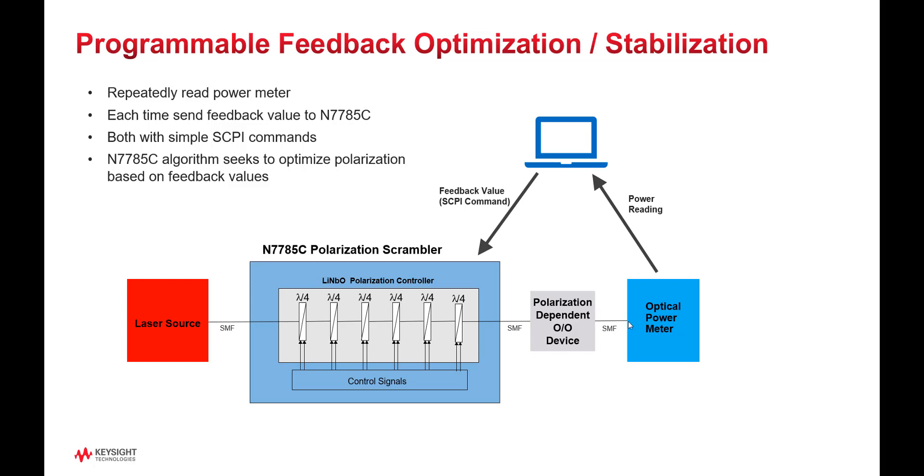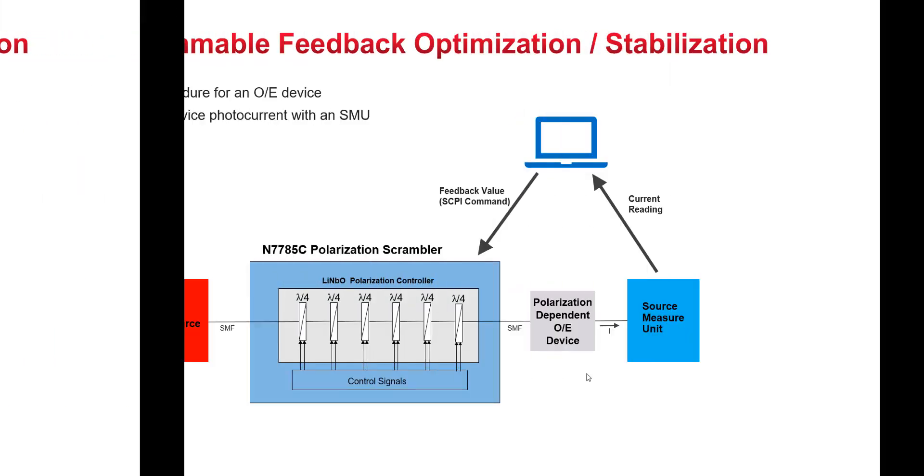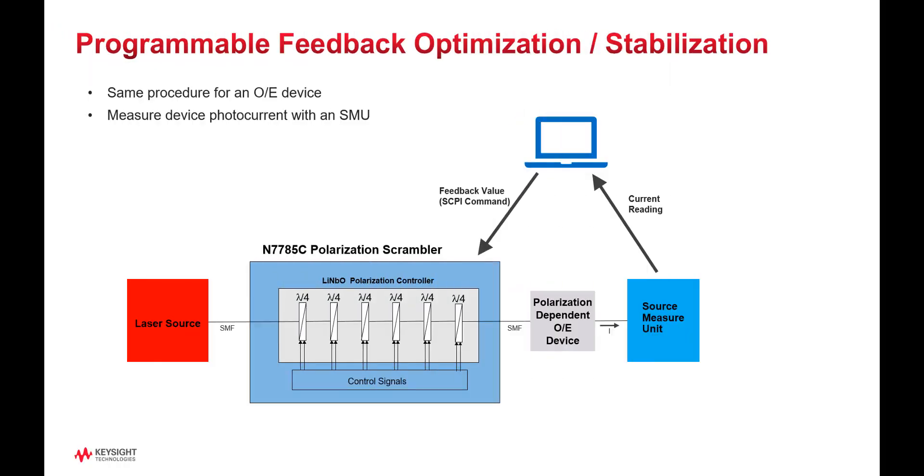is found on the optical power meter. This is simple to implement with just a few SCPI commands. If instead the device is optical-to-electrical, the same optimization can be done, but this time by measuring the current out of the device with an SMU or current meter.